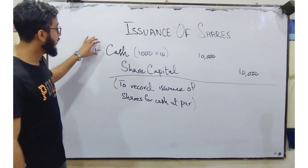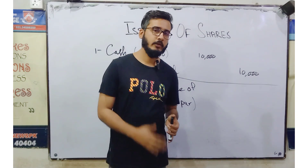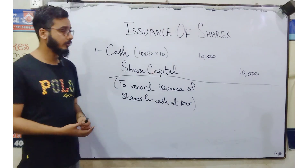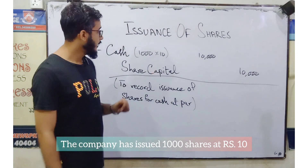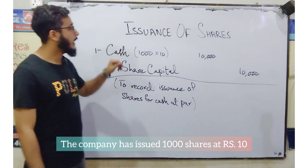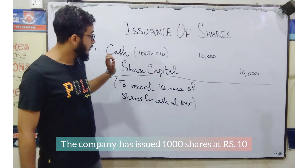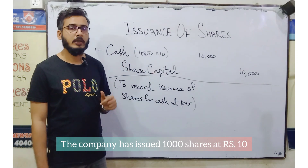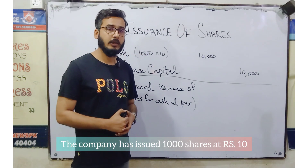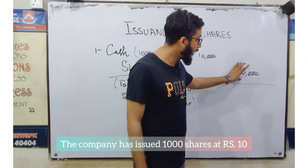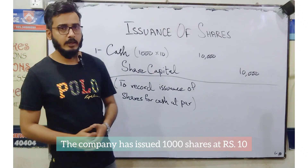The first entry: we are going to pass the entry by the same general rules applied before. The company has issued 1,000 shares at rupees 10, at the par value. Cash has been inflowed to the company and shall be written on the debit side. In ordinary cases we credit the capital account, but here we credit the share capital account because the shareholder has made the investment — 10,000 as credit. The narration: to record the issuance of shares for cash at par.